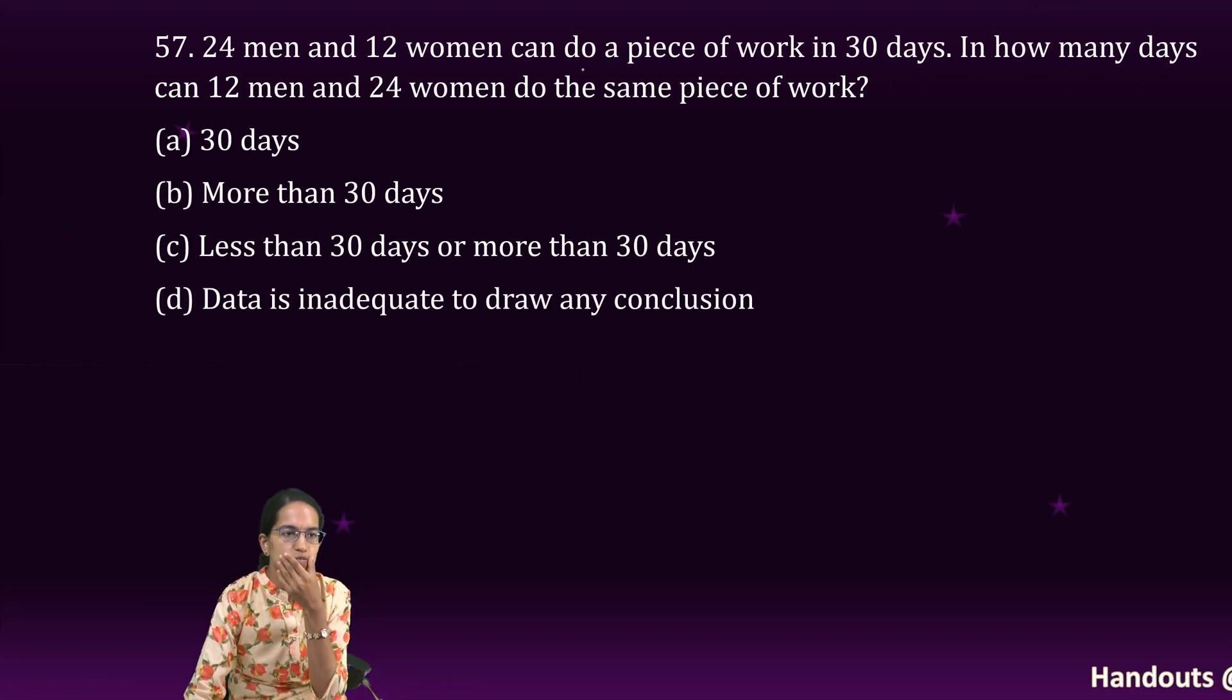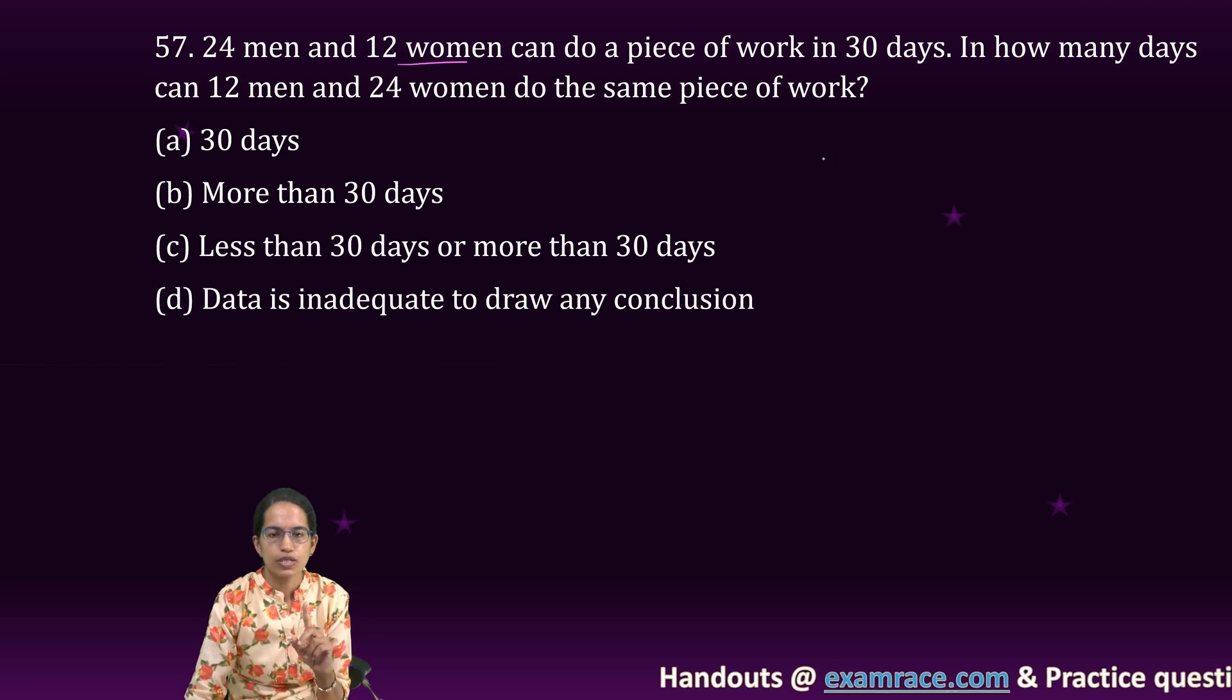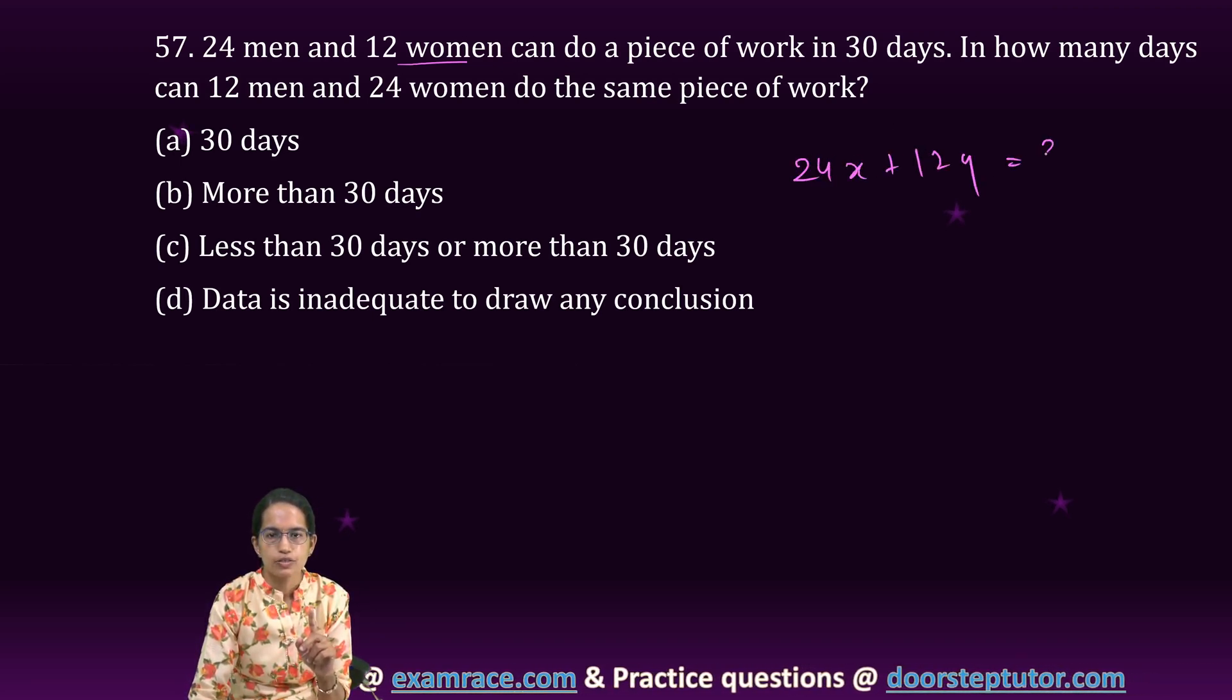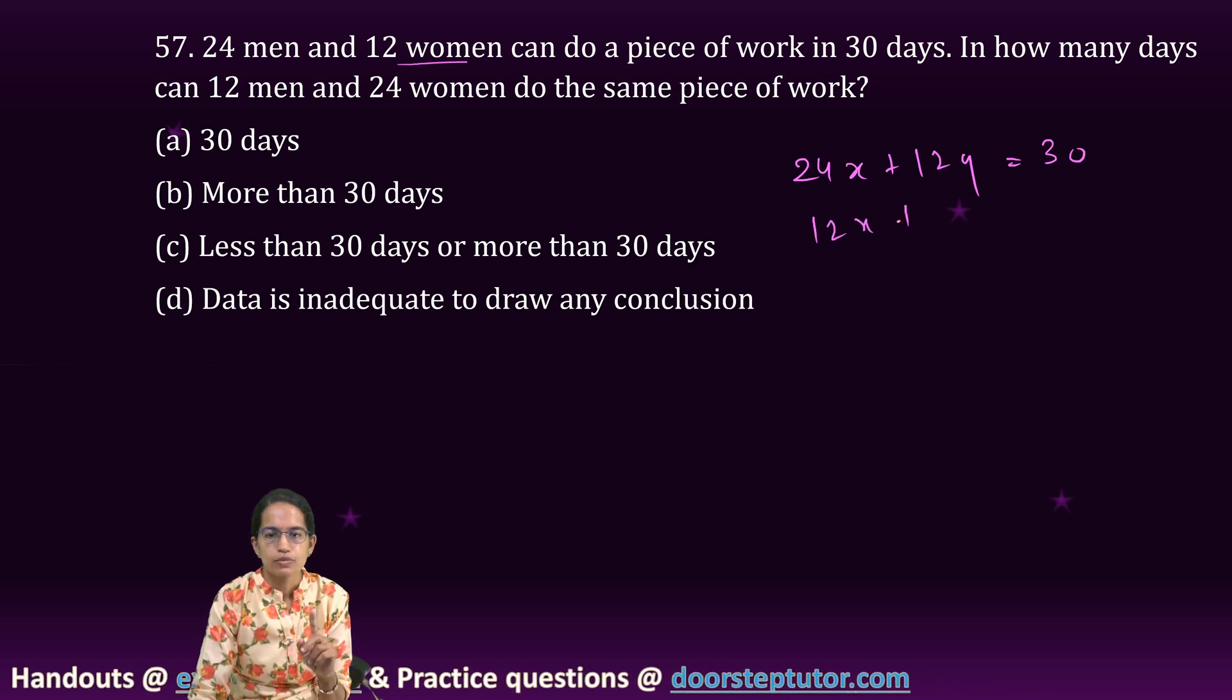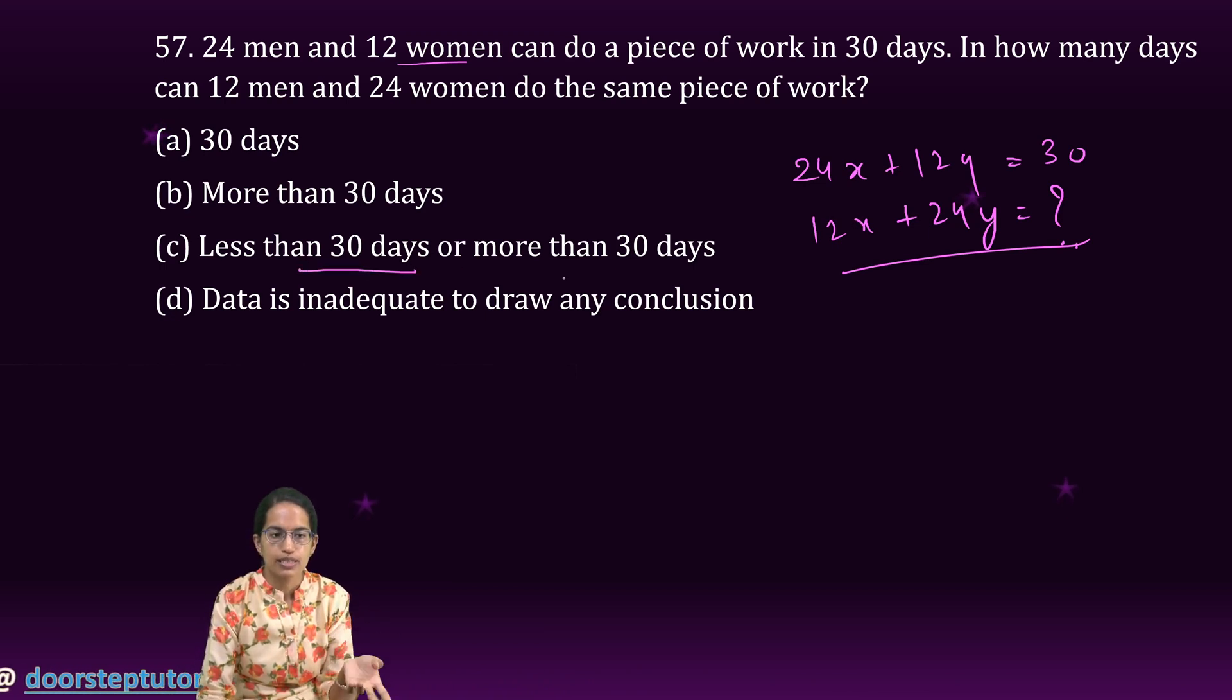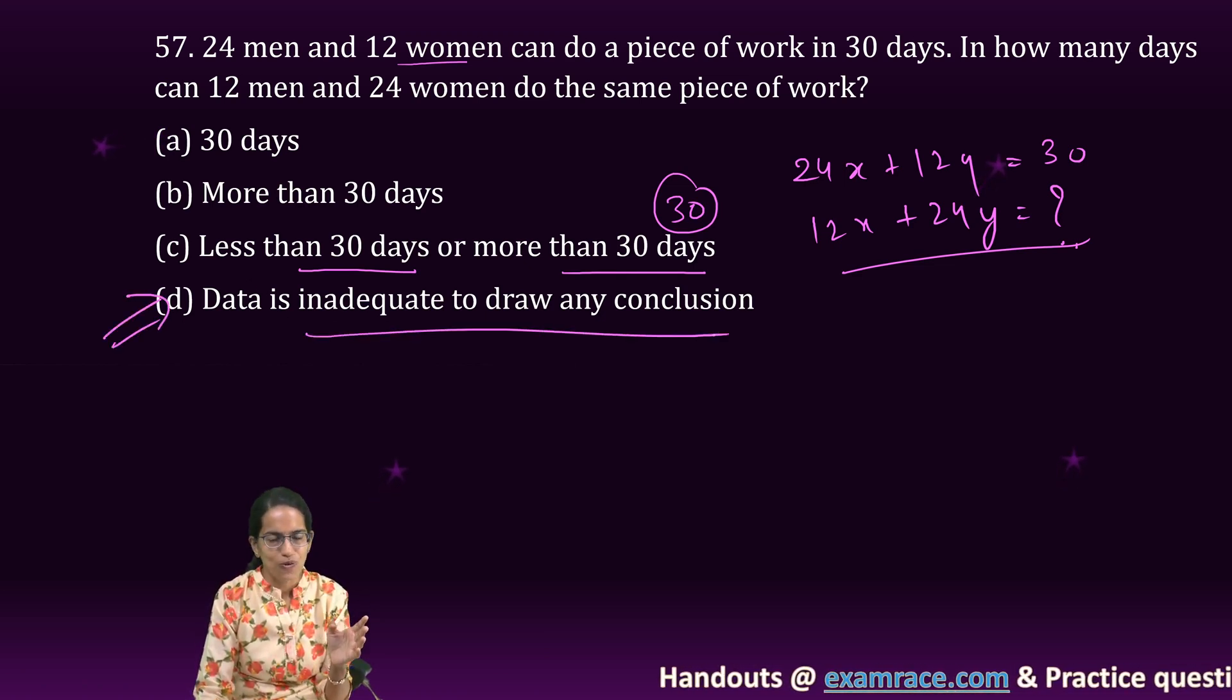The next equation is 24 men and 12 female can do a piece of work in 30 days. That means 24x plus 12y is equal to 30. 12x plus 24y is how much? I cannot calculate it because it can be less than 30, it can be more than 30, but it can also be equal to 30 if the rates are same. So in this question, I can simply say data is inadequate to draw any kind of conclusion. Very direct question.